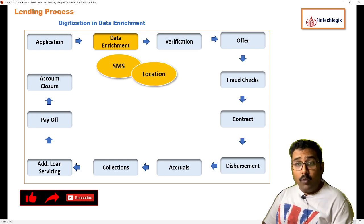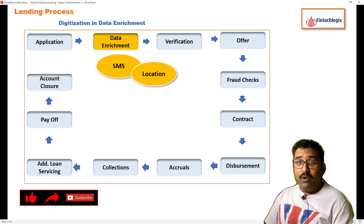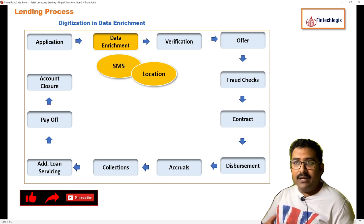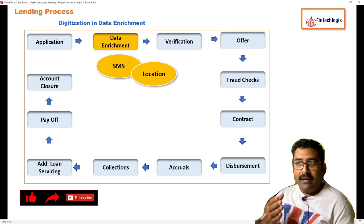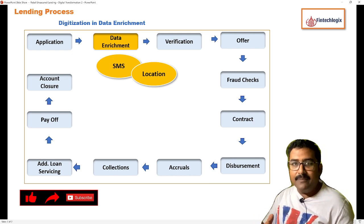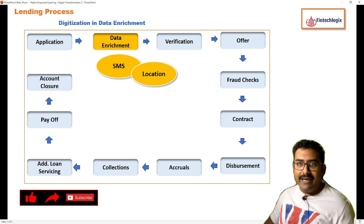The second one is location data. Location data is also shared by your mobile device. It tells you what the normal distance is between the customer's work location and residential location. This also gives an idea of the different locations the customer visits, reducing the chances of fraud.